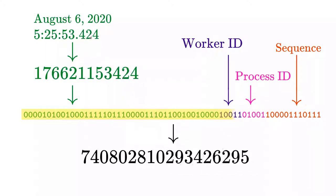42 bits represent the timestamp. It's the number of milliseconds since the Discord epoch, which is the beginning of January 1st, 2015 in UTC.